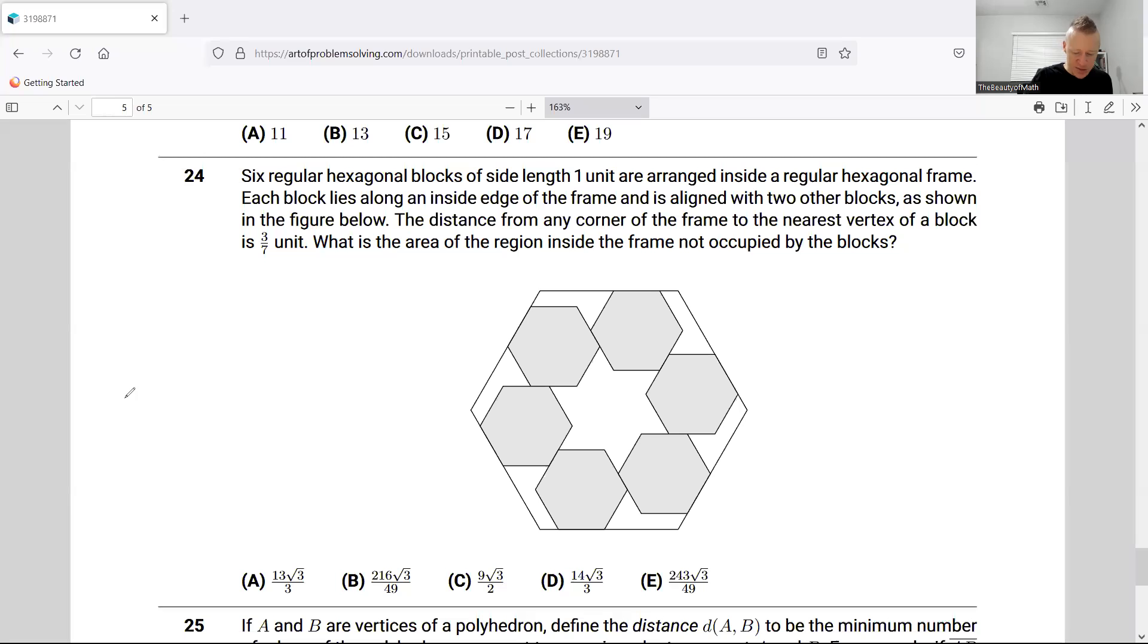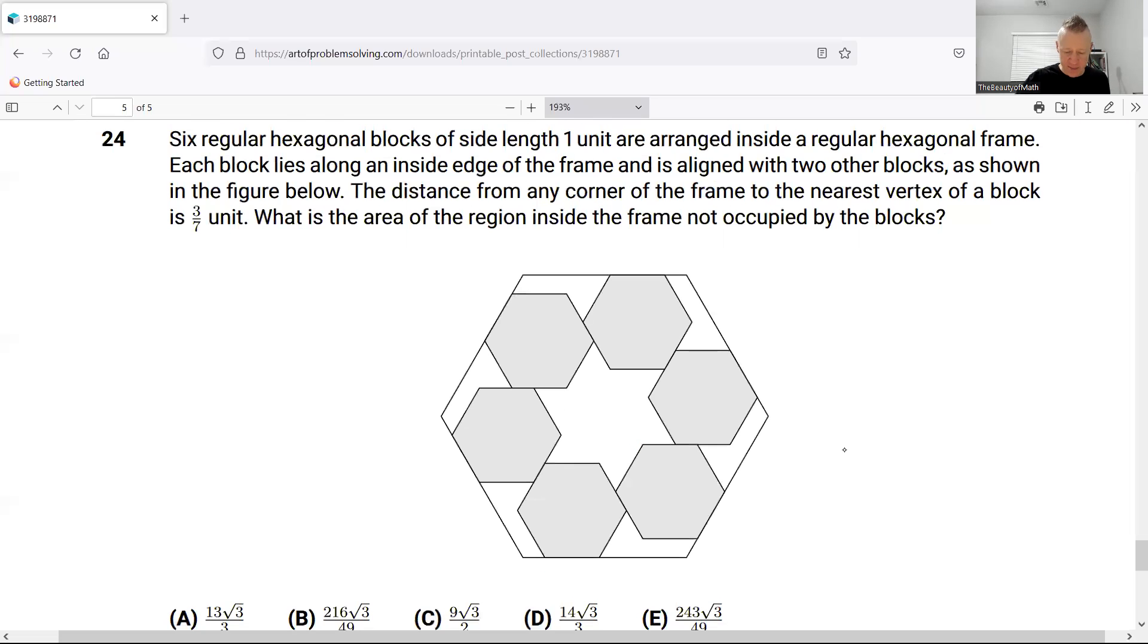Let's erase that. I'm going to kind of zoom in a little bit here. So we're going to have three-sevenths right there. And we also have that here. And you may want to note a few others just in case. We don't know what we're doing yet, right? What is the area of the region inside the frame not occupied by the blocks? So the light region this time instead of the shaded region. First, we might want to have a strategy of what we're trying to accomplish.